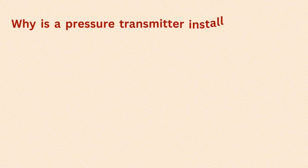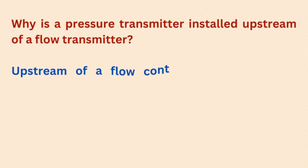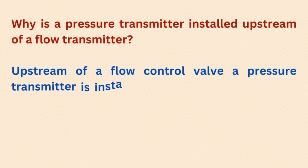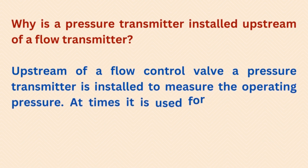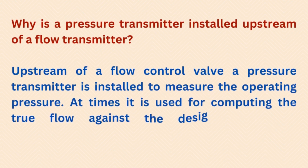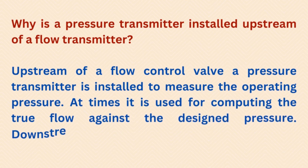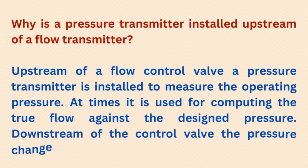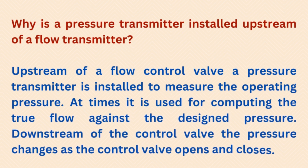Why is a pressure transmitter installed upstream of a flow transmitter, upstream of a flow control valve? A pressure transmitter is installed to measure the operating pressure; at times it is used for computing the true flow against the designed pressure. Downstream of the control valve, the pressure changes as the control valve opens and closes.